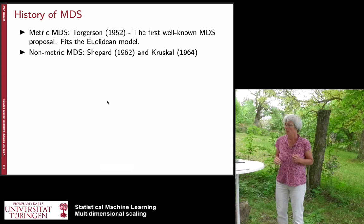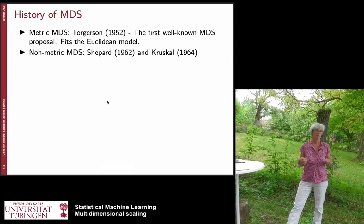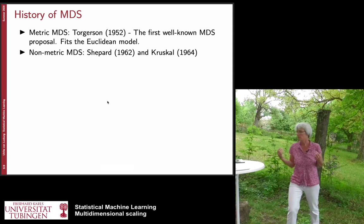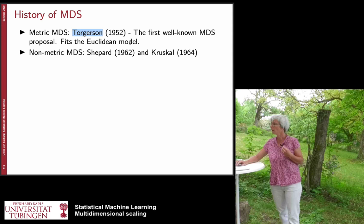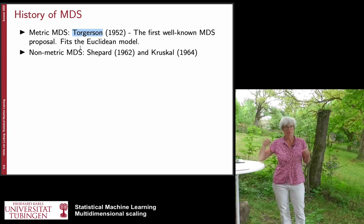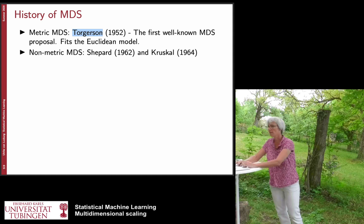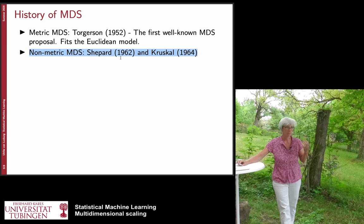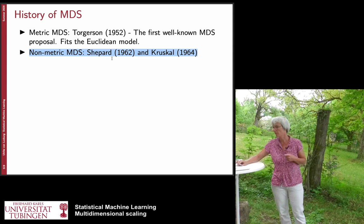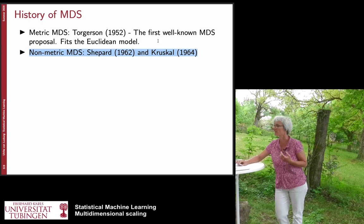Just as a bit of history: classic multidimensional scaling and metric MDS with a stress function are really old — the first algorithms come from the 1950s, with the breakthrough paper by Torgerson introducing classic MDS via the scalar product matrix and eigen decomposition. Non-metric MDS comes from the psychometric scaling literature of the 1960s, with Shepard, Kruskal, and others. You might know Kruskal from minimal spanning tree algorithms — he has invented quite a number of things still used today.